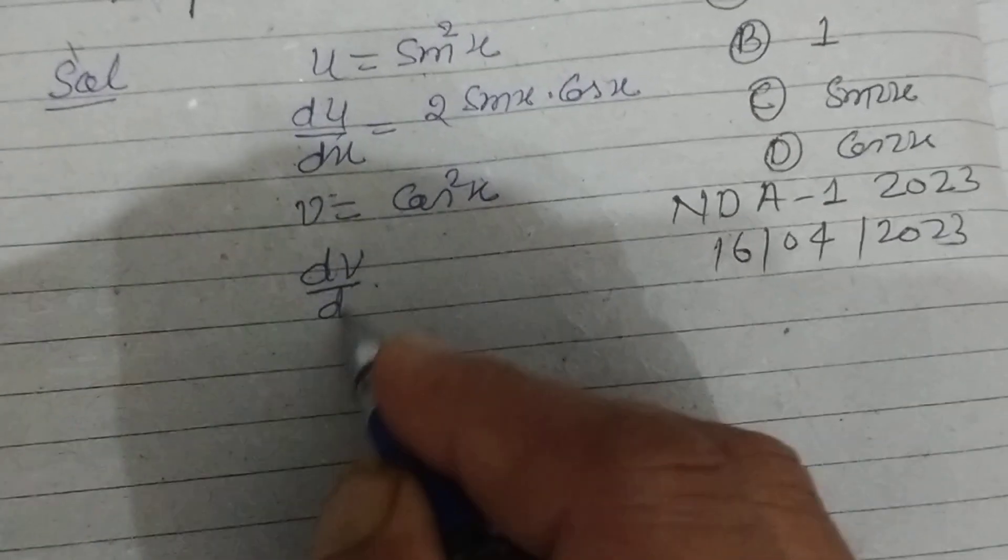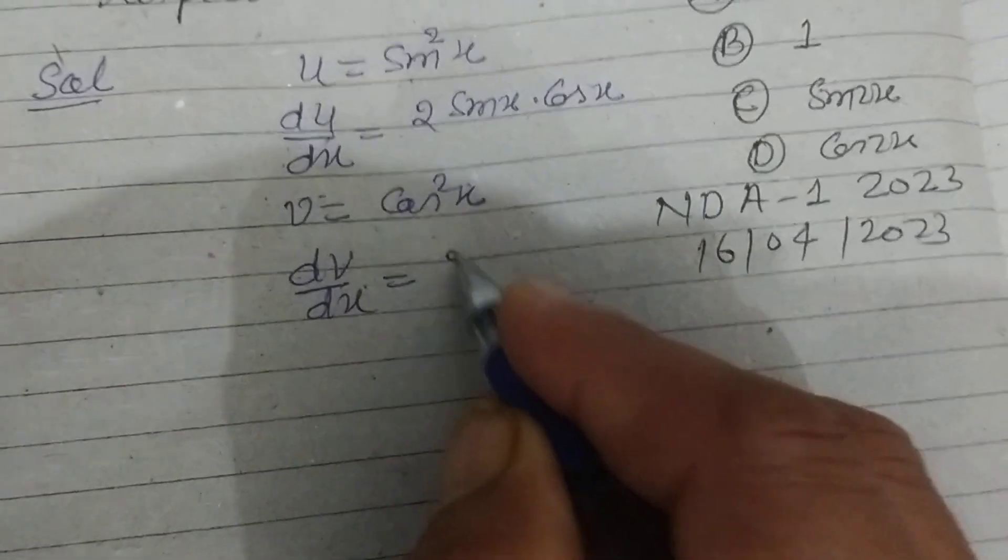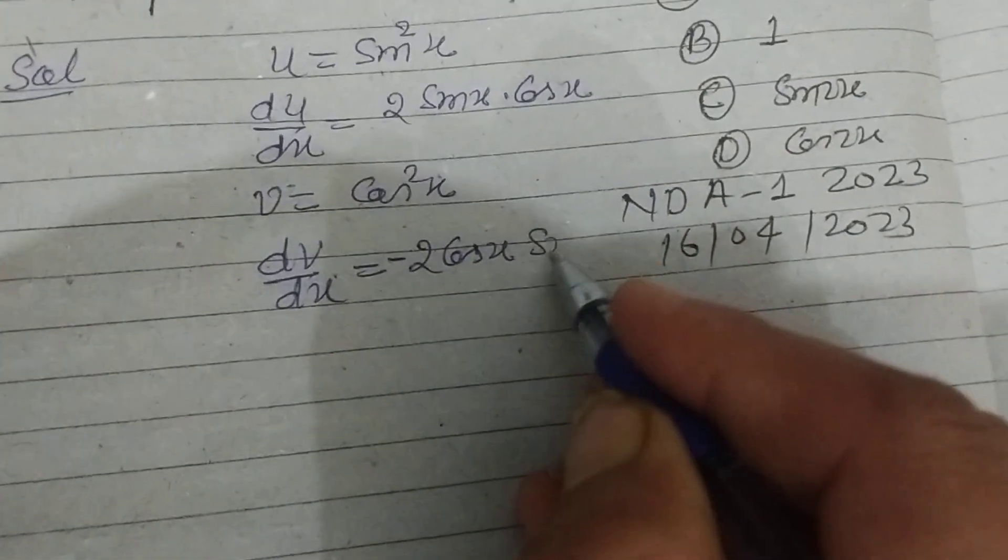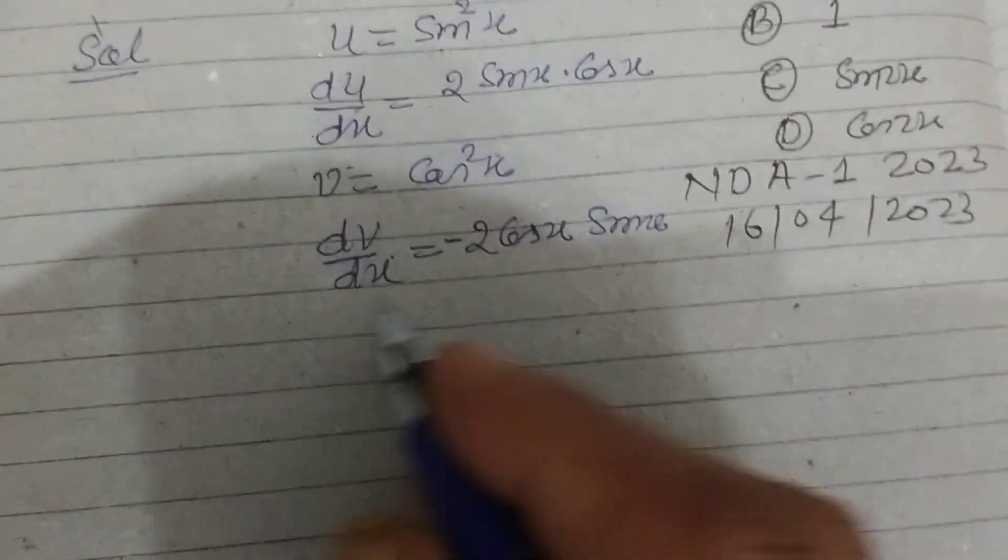So dv upon dx equal to 2 cos x and derivative of cos x is minus sin x.